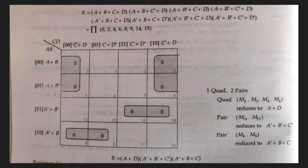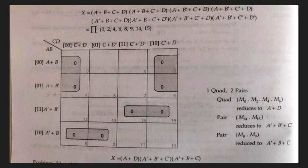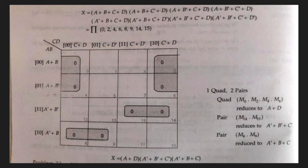Combining all reduced group expressions, the final minimized POS expression is: X = (A+D)·(A'+B'+C')·(A'+B+C'). This is our final reduced expression. For details on how to reduce groups using the POS method, refer to the previous video. This is how we solve this type of problem. More videos on Boolean algebra will follow. Thank you.